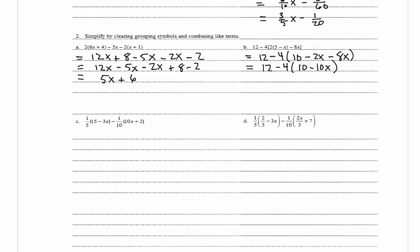Now we distribute the negative 4. We have 12, then negative 4 times 10 is negative 40, and negative 4 times negative 10x gives positive 40x. Combining like terms: we have 40x, and 12 minus 40 equals negative 28. So the answer is 40x minus 28.